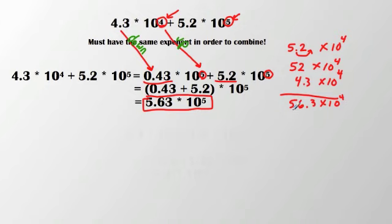our coefficient has to be between 1 and 10, so I would have to change this again and decrease it by a power of 10 to get 5.63, which means I would have to increase this by a power of 10 to get 10 to the 5th.